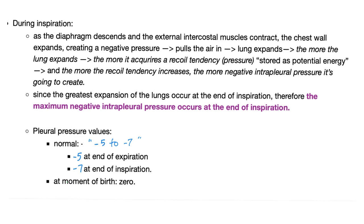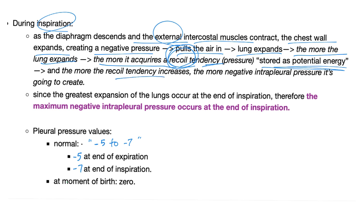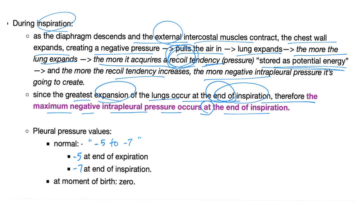Why does the pleural pressure become more negative during inspiration? Because during inspiration, the diaphragm descends, the intercostal muscles contract — especially the external — the chest wall expands, creating a negative pressure that pulls the air in, the lung expands. The more the lung expands, the more it acquires a recoil tendency stored as potential energy, and the more the recoil tendency, the more negative the intrapleural pressure is. Since the greatest expansion of the lung occurs at the end of inspiration, the maximum negative intrapleural pressure occurs at the end of inspiration. Normal value: negative 5 to negative 7.